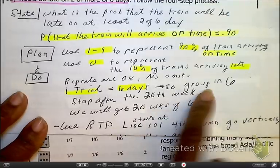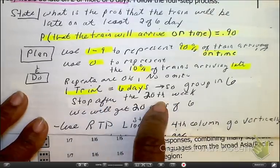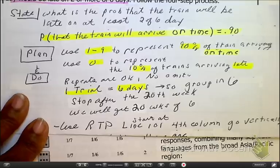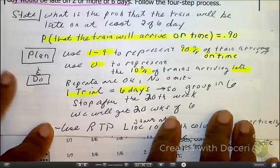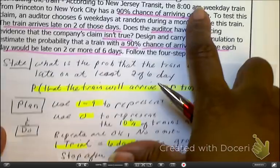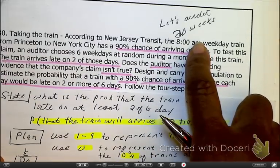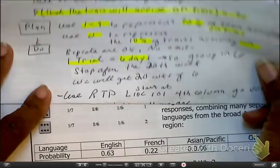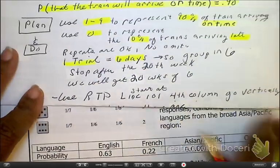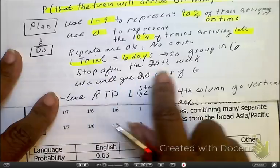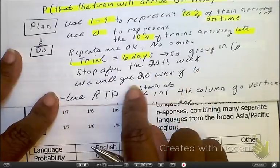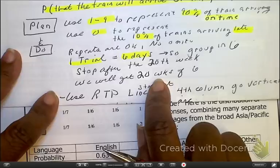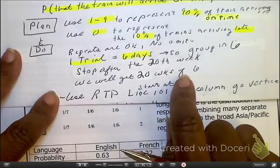We're only looking at six days in a week. We're going to stop after the 20th week. Why? They didn't say it, but they need to start giving us some clarification on when to stop. Because I said that we're going to audit it for 20 weeks. We're going to basically get 20 weeks of six digits, six numbers.